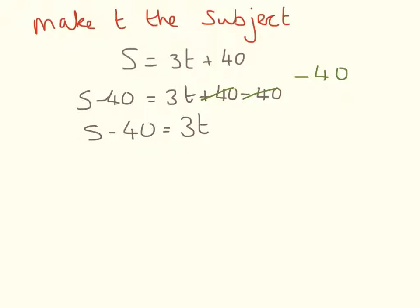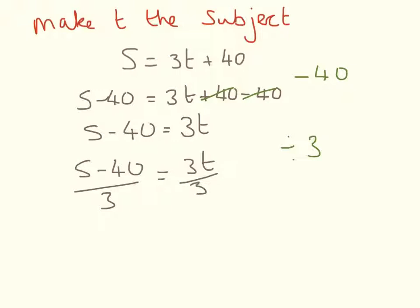Now we need to get rid of the 3 on the right hand side of the equation, so we divide everything by 3. We end up with s minus 40 divided by 3 equals 3t divided by 3. Because we have 3 on the top and the bottom they cancel each other out, so our answer is s minus 40 divided by 3 equals t.